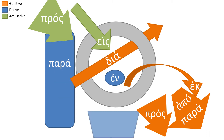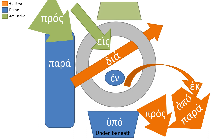Upo means 'beneath,' 'under.' Don't you want a stable foundation under you? Here's one that doesn't quite fit that pattern — it's huper, which means 'above,' 'over.' I'm not sure why that's accusative.